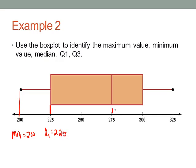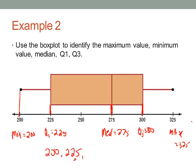Our median is right here at 275. Our Q3 is 300. And our maximum here is 325. Or you could have just written those numbers in order: 200, 225, 275, 300, and 325.